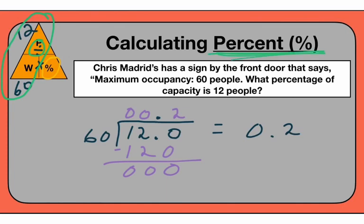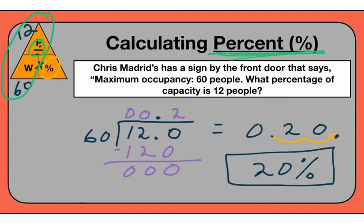We're solving for percent. When you take a decimal and turn it into a percent, you move the decimal point to the right two places. So 0.2 really turns into 20, or 20%. At Chris Madrid's, if there were 12 people inside, that's 20% of the maximum occupancy for that restaurant.